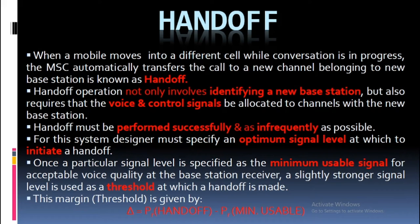Handoff: When a mobile moves into a different cell while a conversation is in progress, the MSC automatically transfers the call to a new channel belonging to the new base station — this is known as handoff. Handoff operation not only involves identifying a new base station, but also requires that the voice and control signals be allocated to channels associated with the new base station. Handoff must be performed successfully and as infrequently as possible. The system designer must specify an optimum signal level at which to initiate a handoff. A slightly stronger signal level than the minimum usable signal is used as a threshold at which handoff is made, and this margin is given by: Δ = P_R(Handoff) − P_R(Min usable).